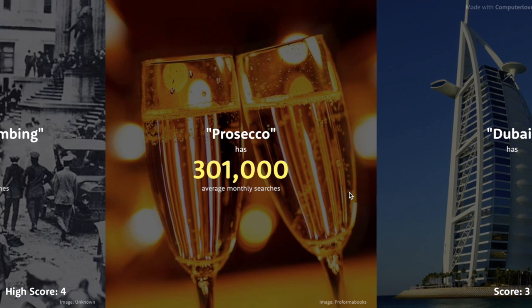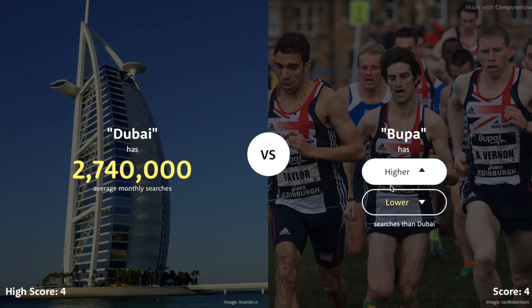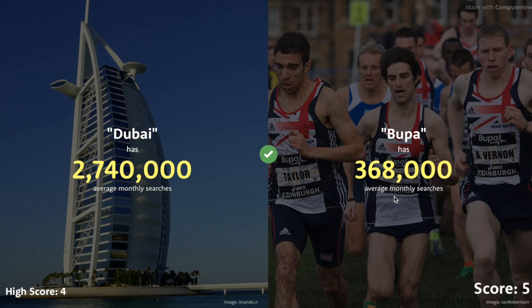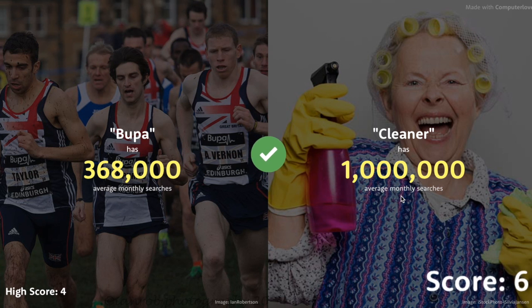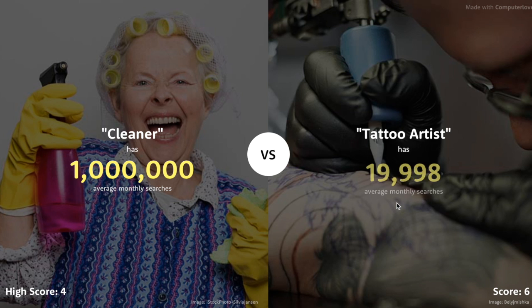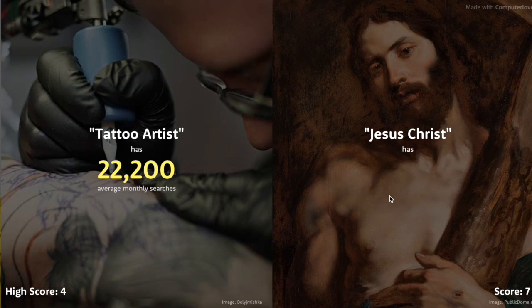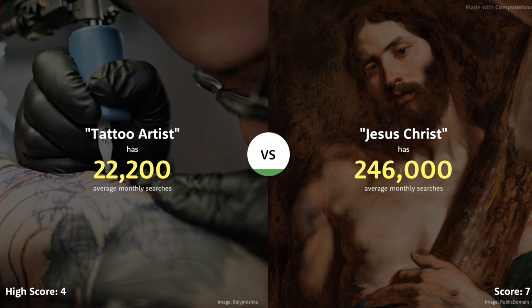Don't know what Prosecco is, maybe a wine company. Has to be over a thousand. Wow, 300,000! But compared to Dubai — Dubai has to be higher. Almost 3 million for Dubai. Bupa — no way it beats Dubai at 3 million. Yeah, a lot lower. The next one: Cleaner — I'm going to say higher, in the millions. 1 million exactly — kind of right. Tattoo Artists versus Cleaner, definitely lower than Cleaner. Only 22,000 — wow.